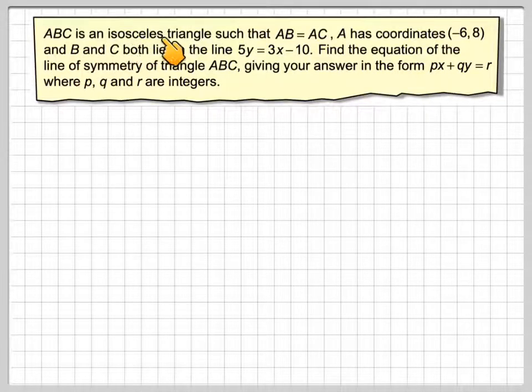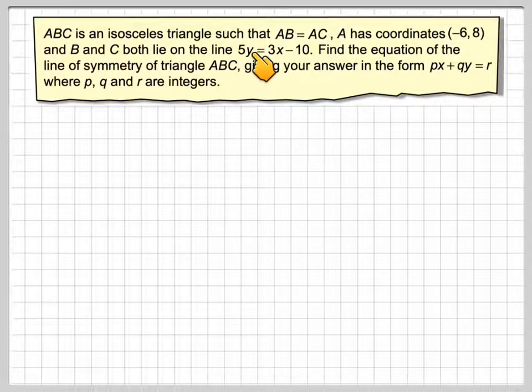ABC is an isosceles triangle such that AB is equal to AC. A has coordinates (-6, 8), and B and C both lie on the line 5Y = 3X - 10. Find the equation of the line of symmetry of triangle ABC, giving your answer in the form PX + QY = R, where P, Q and R are integers.